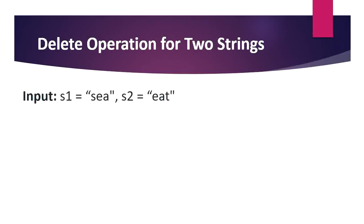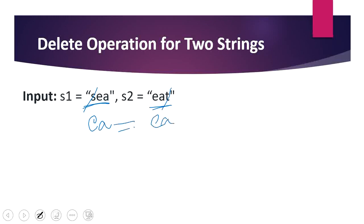In our first example, word s1 is s-e-a and word s2 is e-a-t. What characters do we need to delete to make them equal? If we delete 's' from word s1, it becomes e-a, and if we delete 't' from word two, it becomes e-a, so they are equal. We deleted two characters, so our output is going to be two.